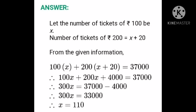From the given condition, 100 times x plus 200 times x plus 20 is equal to 37,000. Therefore, 100x plus 200x plus 4000 is equal to 37,000. So 100x plus 200x becomes 300x. Therefore, 300x is equal to 37,000 minus 4000 is equal to 33,000. Therefore, x is equal to 33,000 upon 300 is equal to 110.